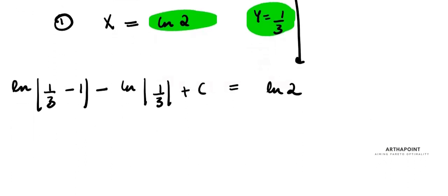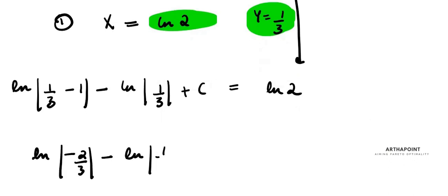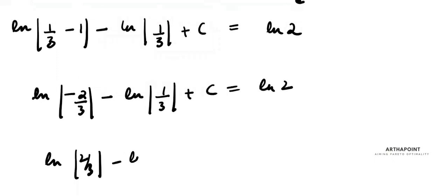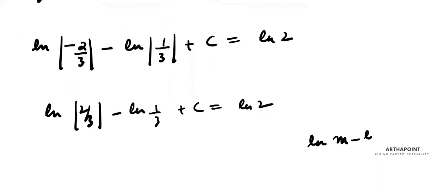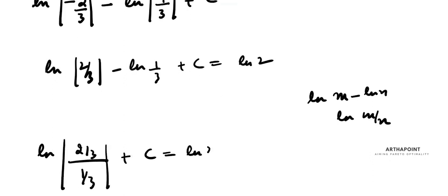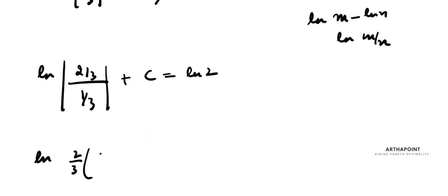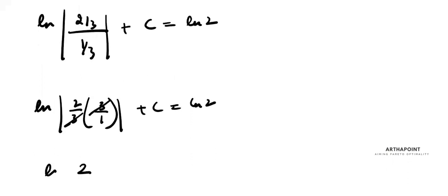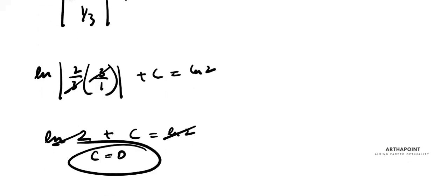Using the property ln(m) - ln(n) = ln(m/n): ln|(2/3)/(1/3)| + c = ln2, which is ln2 + c = ln2. Therefore c = 0.